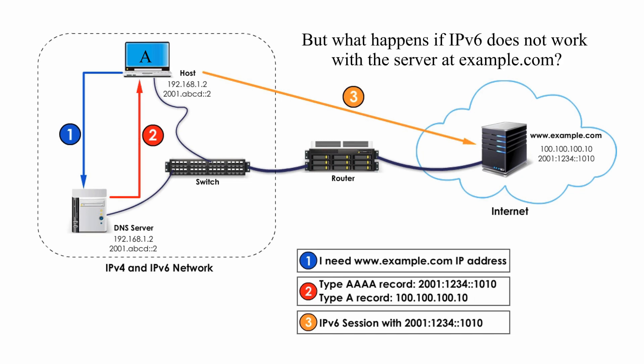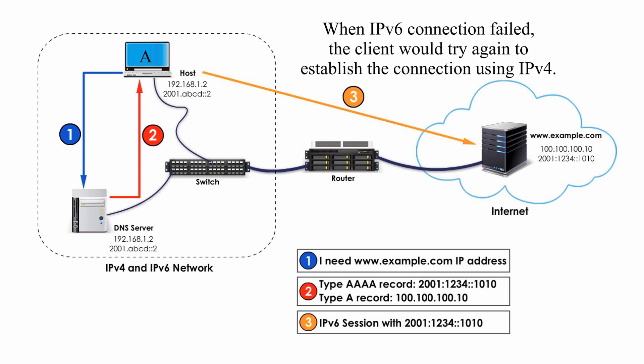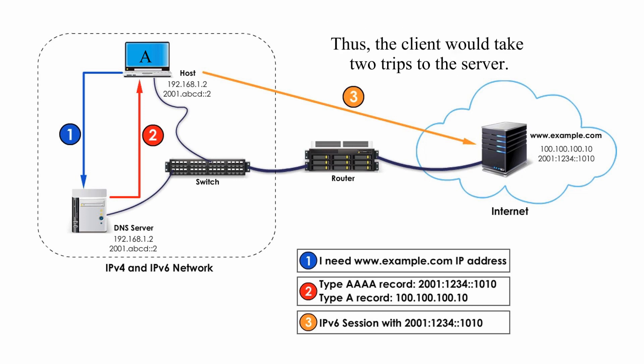But what happens if IPv6 does not work with the server at example.com? The client would experience some delay. The reason is simple: when the IPv6 connection fails, the client would try again to establish the connection using IPv4. Thus, the client would take two trips to the server.